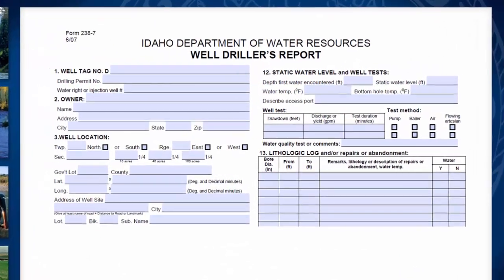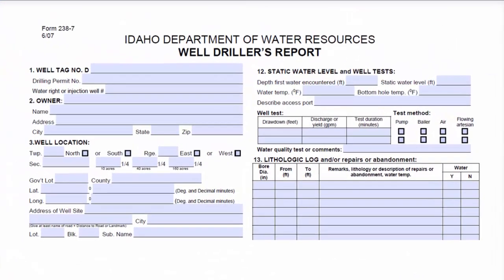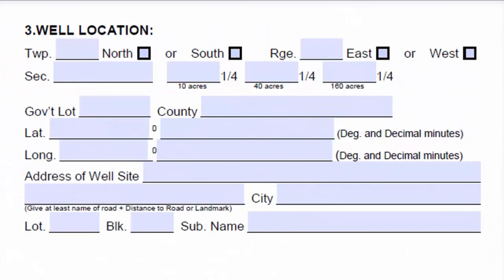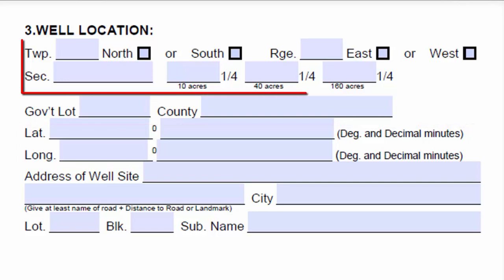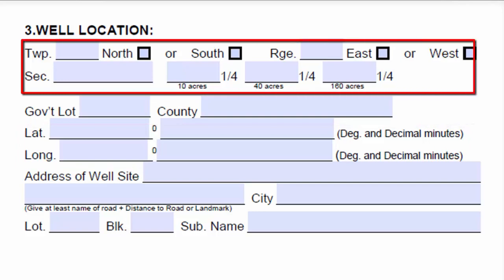The Well Drillers report requires a lot of information, including Section 3, that asks you to express your location in degrees, decimal minutes, latitude and longitude, as well as the PLSS systems: township, range, section, and quarter quarter.